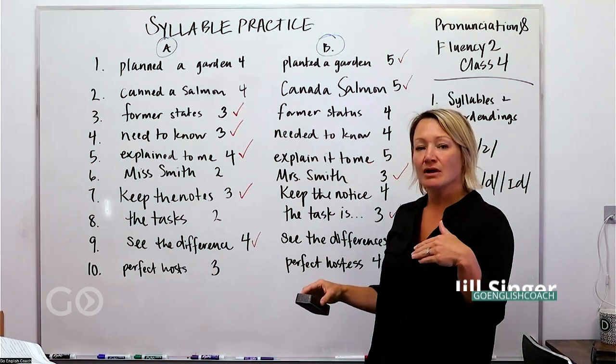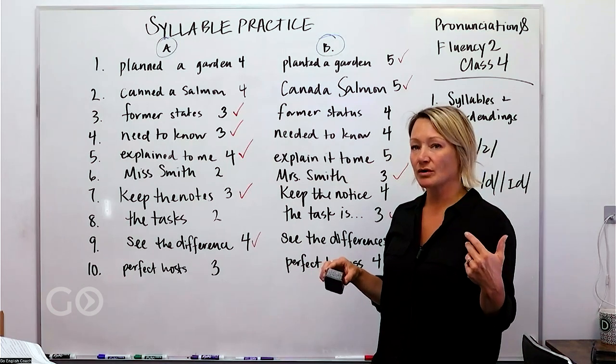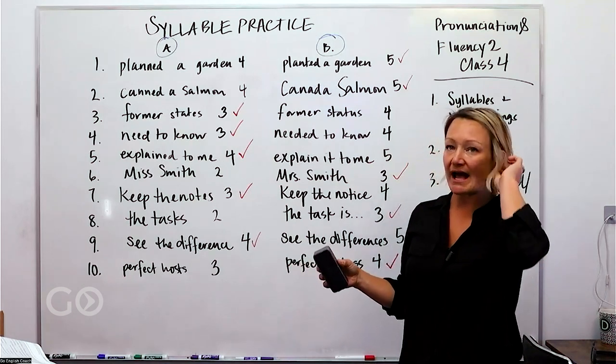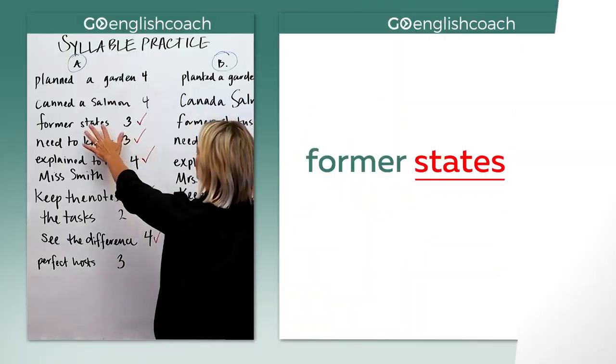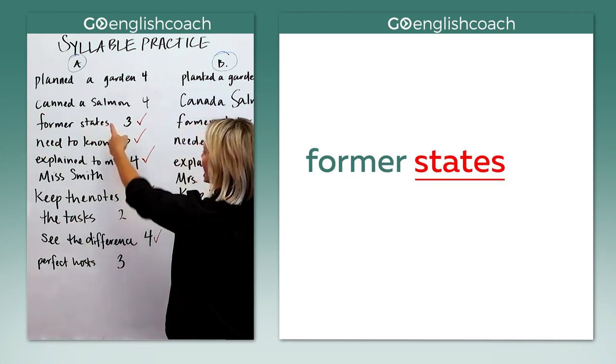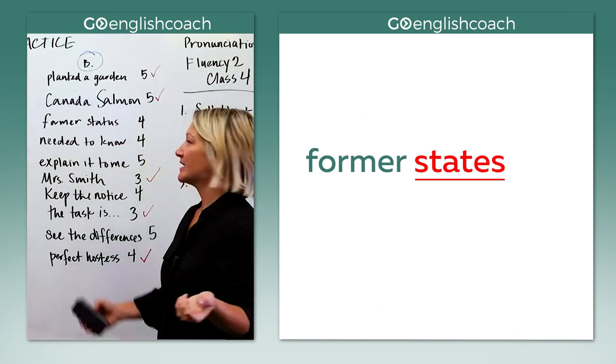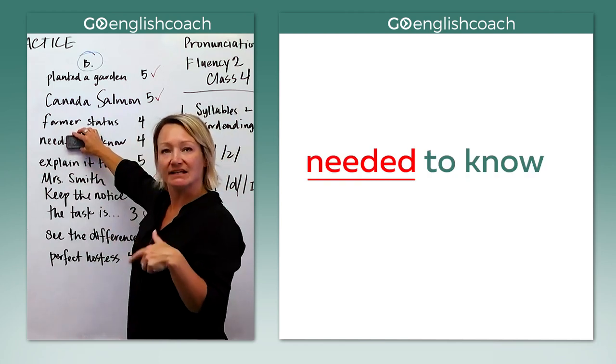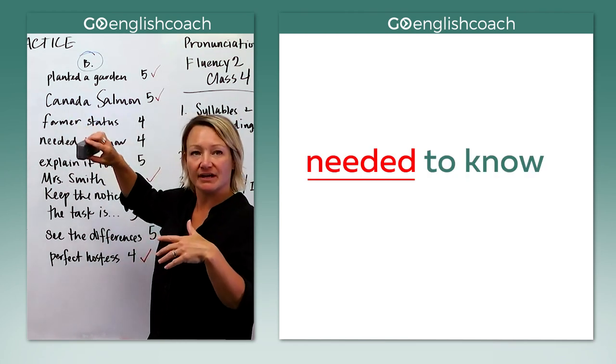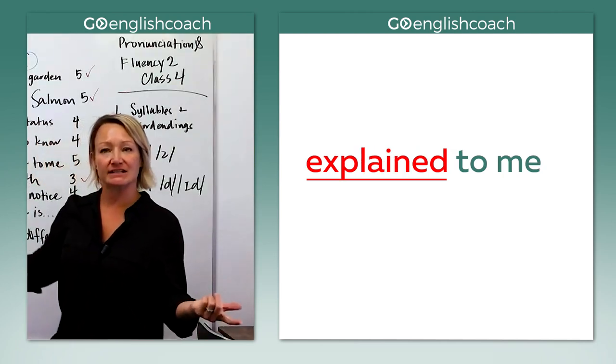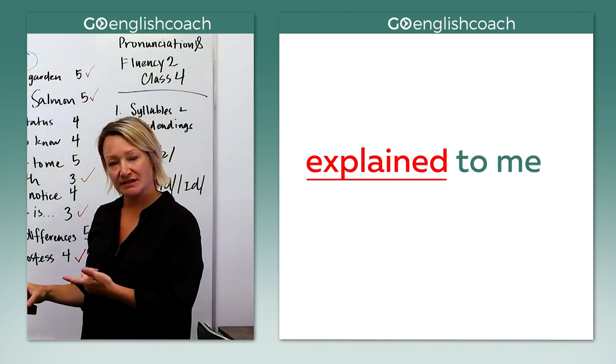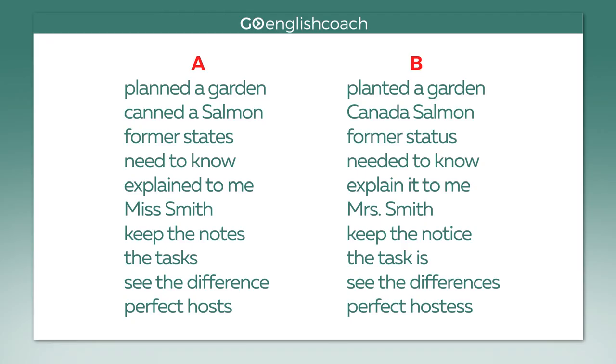Sometimes we have verbs or nouns where you add something at the end and it changes, and sometimes it doesn't. Here we took the word state and added an S to make states. Here we have the word need, we added ed and it's needed. Here we have the verb explain, we added ed and it's explained. So let's take a look. When does it change and when does it not change the number of syllables in the word?